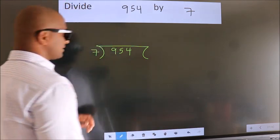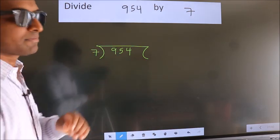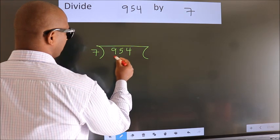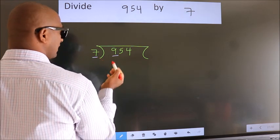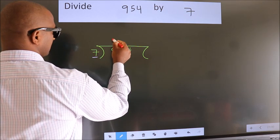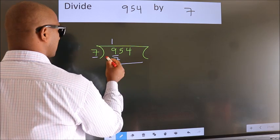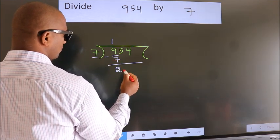This is your step 1. Next, here we have 9, here 7. A number close to 9 in 7 table is 7 once 7. Now, we should subtract. We get 2.